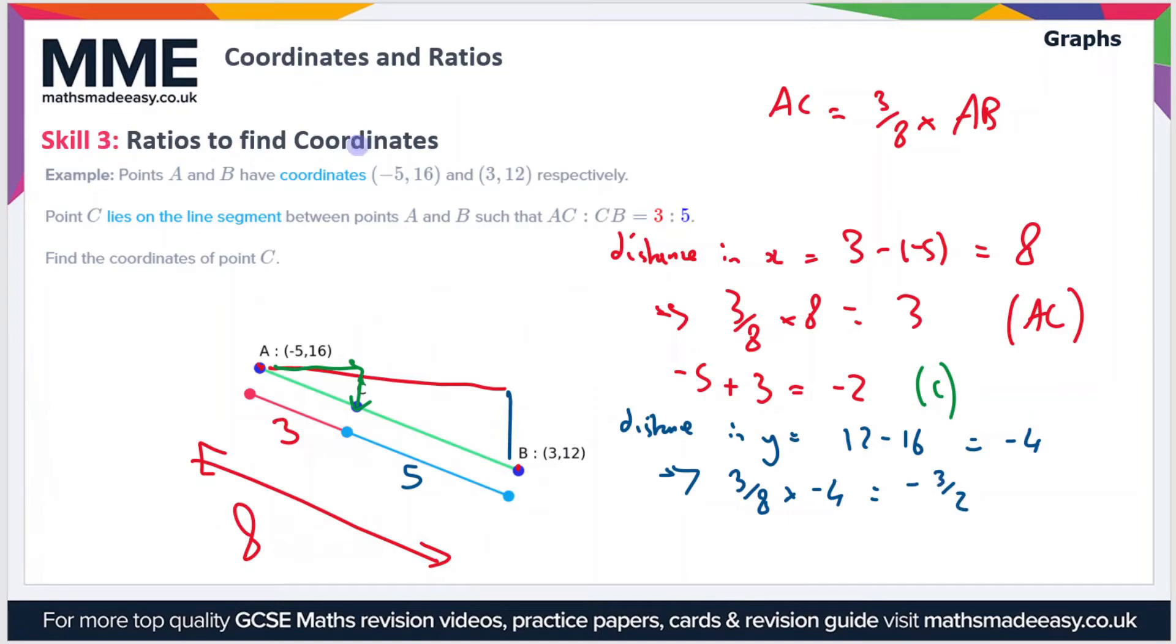Now we're in a position to work out the y-value of C. To do that, we just add this value of -3/2 to the y-value of A. We have 16 plus (-3/2), and if you do that you should get a value of 29/2, which is 14.5. That's our y-value for C.